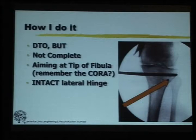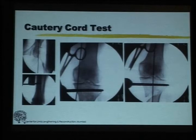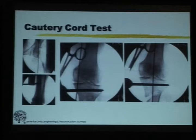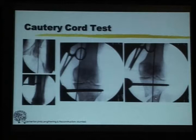On the table, you can do what I call the cautery cord test: hold the cautery cord over the center of the femoral head and the center of the ankle. The middle picture shows the situation before distraction, and on the right is after distraction. When you distract and the wedge has opened, the mechanical axis as represented by the cautery cord becomes centered. We then compress it back, and the patient comes out of theater with the leg as deformed as it was before.